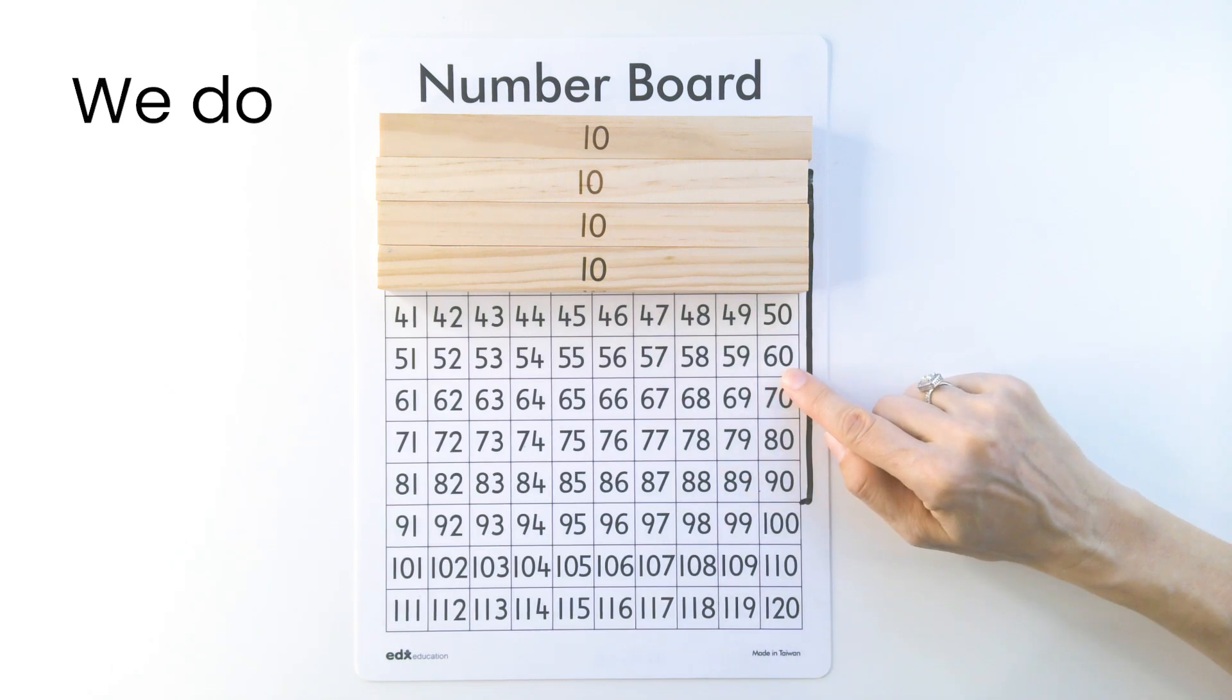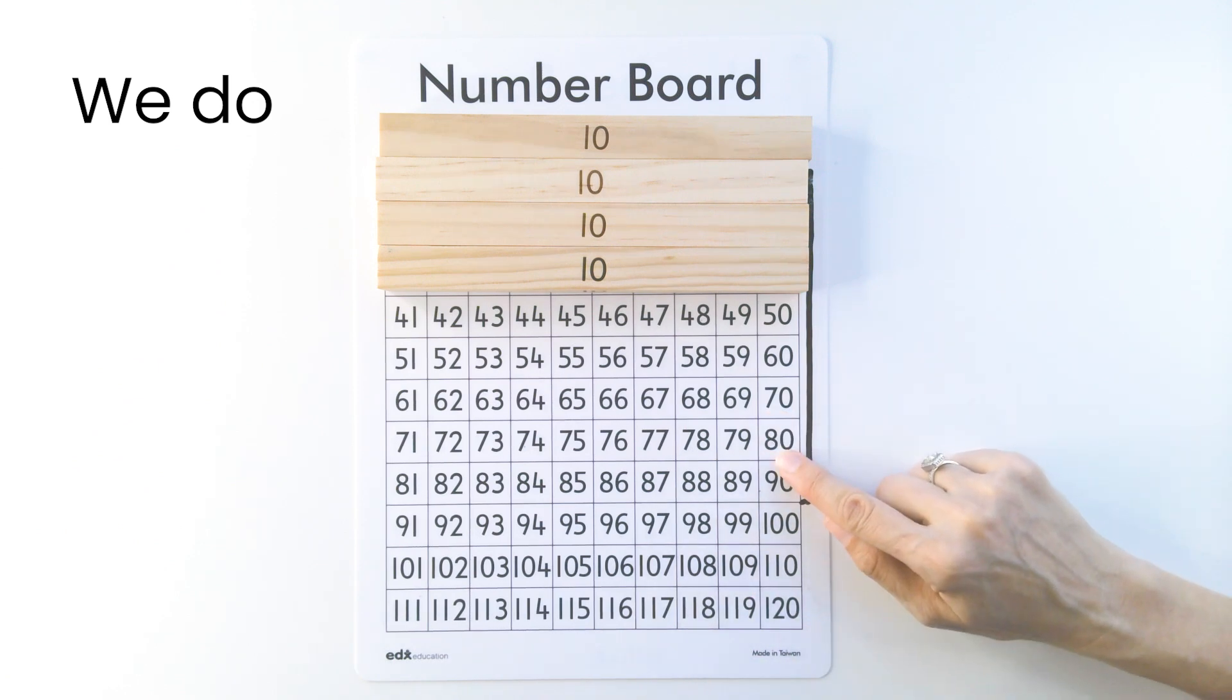60 means 6 tens. 70 means 7 tens. 80 means 8 tens. 90 means 9 tens. Well done.